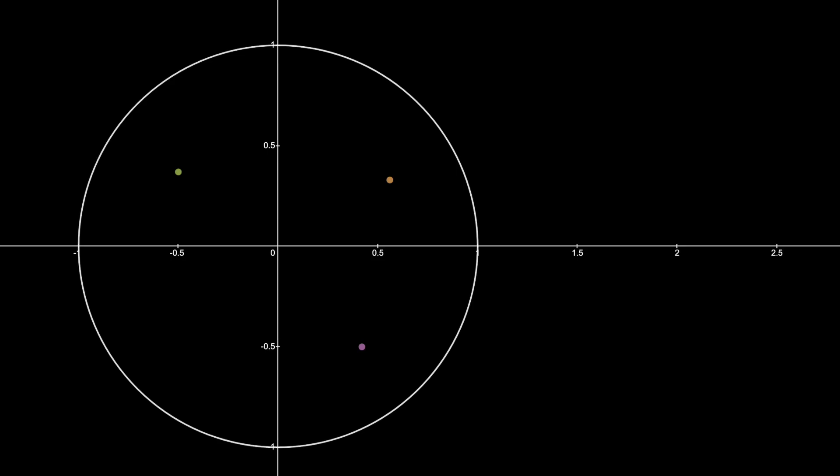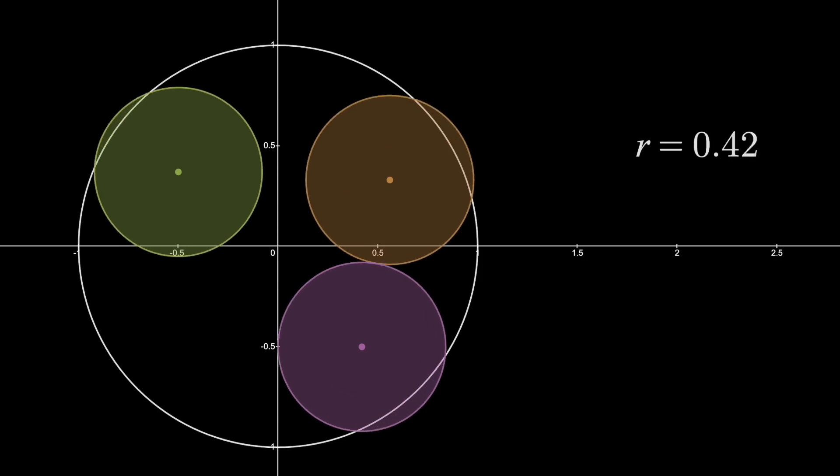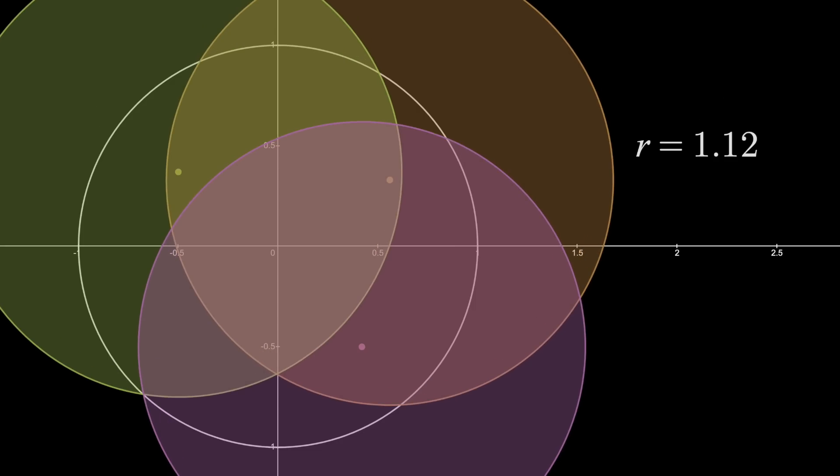All we have to do is create 3 disks centered at the 3 water fountain locations where each has the same radius. Then I just start increasing that radius, keeping them all equal, until the entire mall is covered. This tells us that the maximum someone would have to walk is 1.12 kilometers, and that worst case walk occurs if you're located here. Because that point is on the circumference of two of those circles, which each have a radius of 1.12, so that's how far you are from the nearest water fountain.